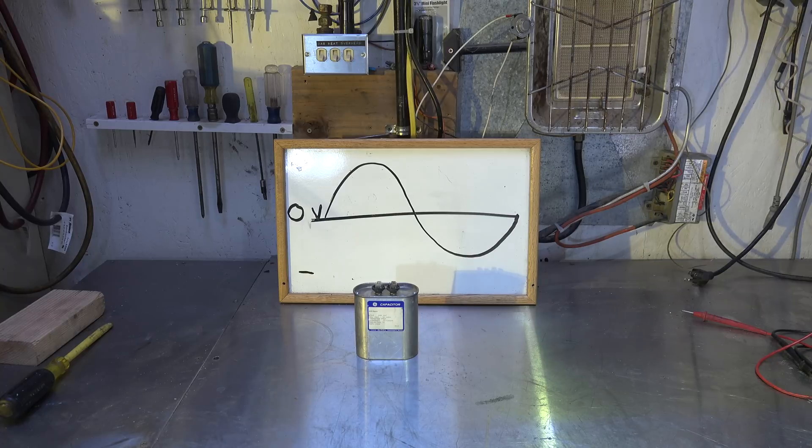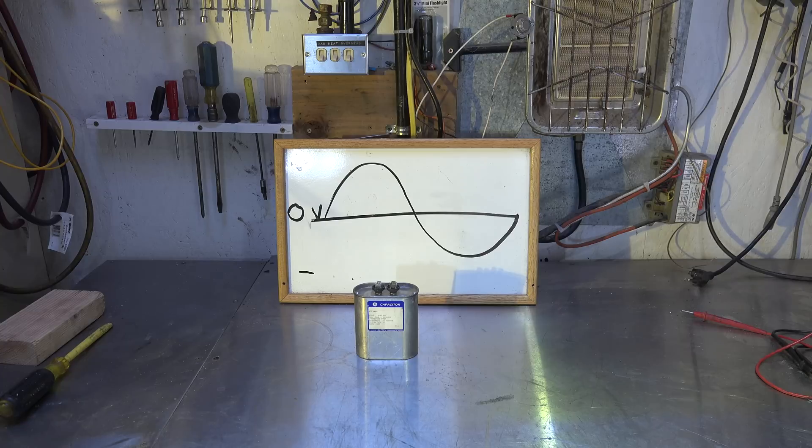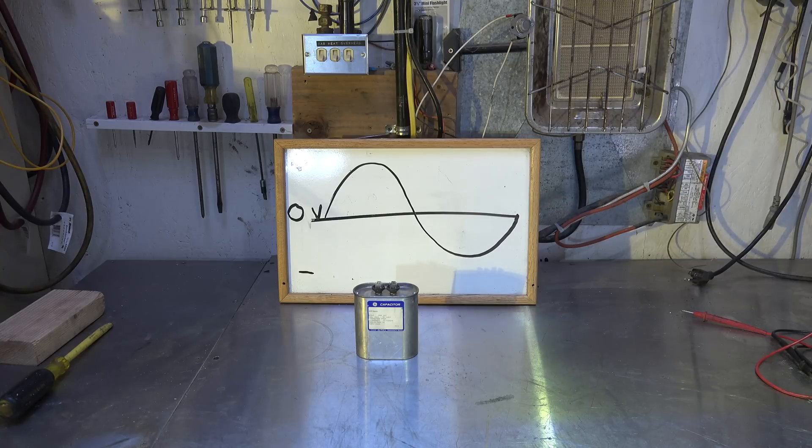So what does it actually do? There's a lot of terms out there: capacitive reactance, voltage leading amperage, amperage leading voltage - all these kinds of things in the AC circuit. I'm not here to try to explain how all those things work and interact. What I'm here to try to explain is simply what this thing does in the circuit.